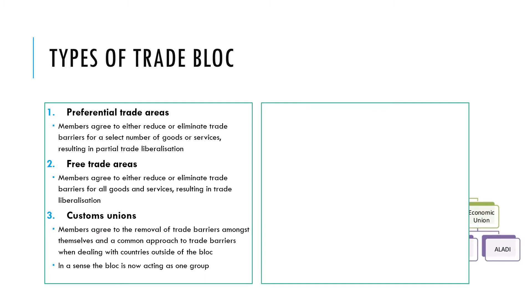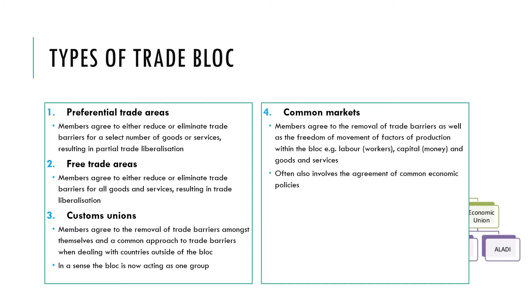The fourth type is a common market, which involves the removal of all trade barriers but also allows free movement of the factors of production. Workers can move across to any member country, money can flow freely between member countries, as well as trading goods and services.